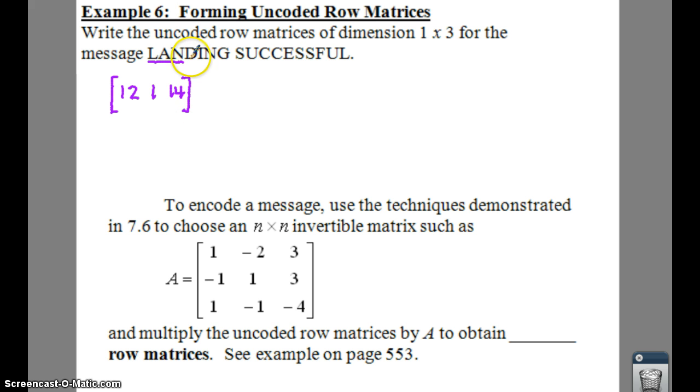Then what we have to do is we have to go through our next three. So we have D, I, N. That would be 4, 9, and 14. Remember, we're using the code from up above in your notes.